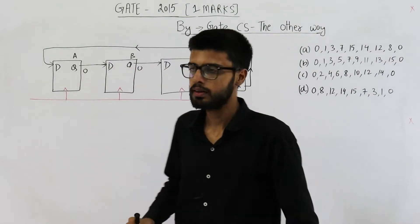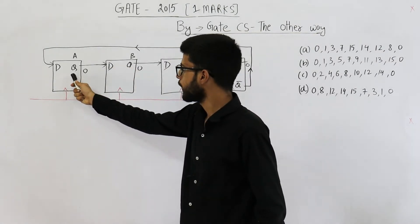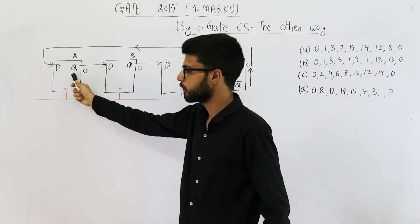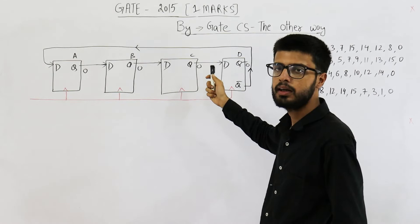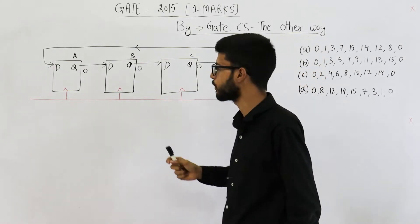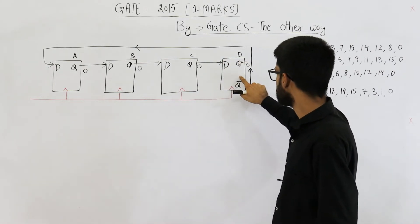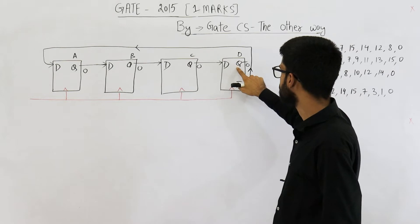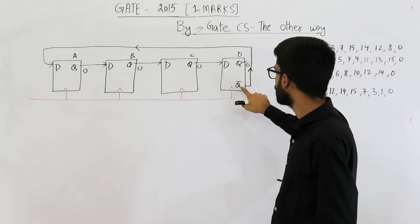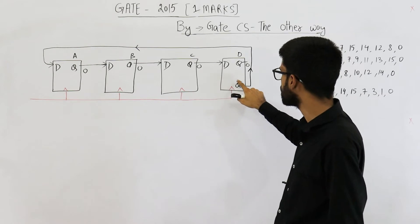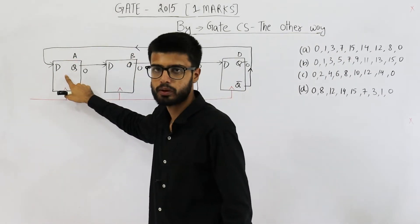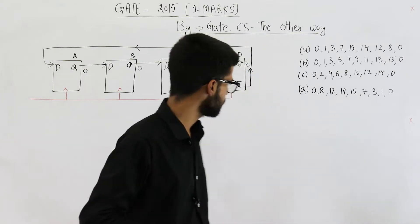To make a Johnson ring counter, we connect this flip-flop's output as its input, similarly here as well as here, except for the last flip-flop. Instead of taking this as the feedback, we take this as the feedback. So complemented output is connected as input here.